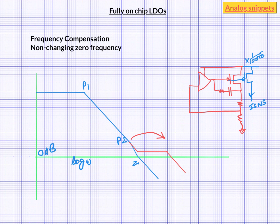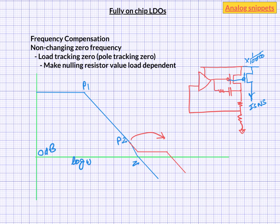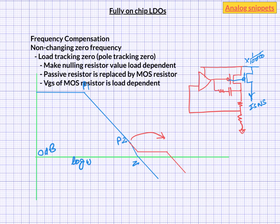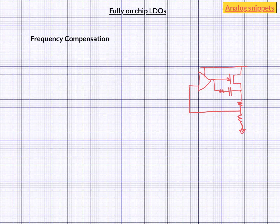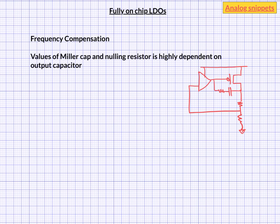One popular solution to this problem is the so-called load tracking zero, also known as pole tracking zero. The idea is to make the nulling resistor value dependent on the load current. The first step is to replace the resistor with a MOS resistor whose gate bias depends on the load current. We already have the load current information in the sense current, so we can use that to generate the bias for this MOS resistor. There can be many creative ways to generate this bias. One final recommendation: the value of the Miller capacitor and nulling resistor is very much dependent on your output capacitor, and since the output capacitor value may not be accurately known, it's a good idea to have trimming options for the Miller capacitor and nulling resistor.